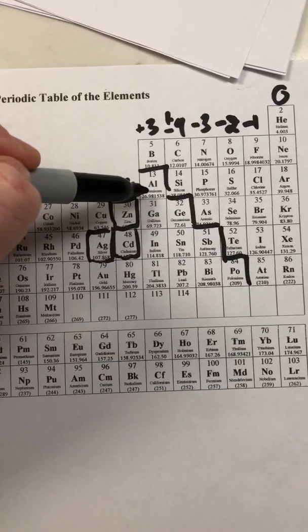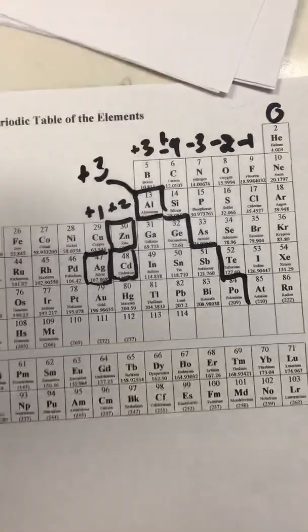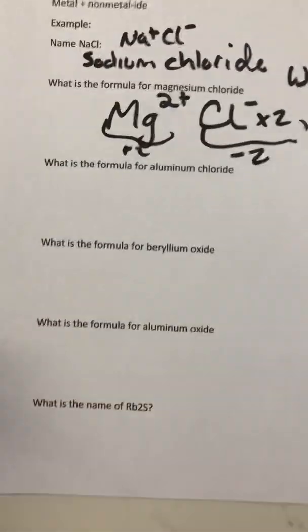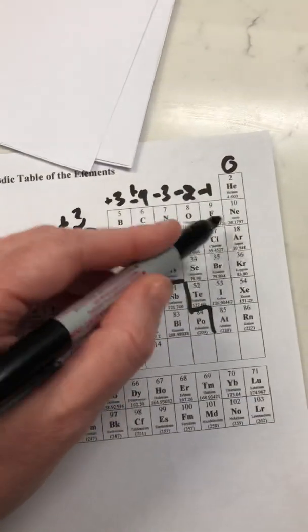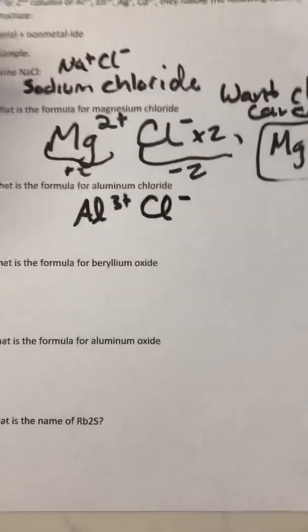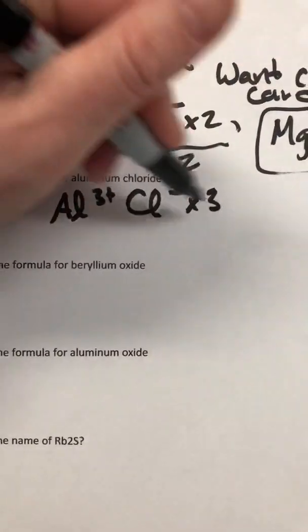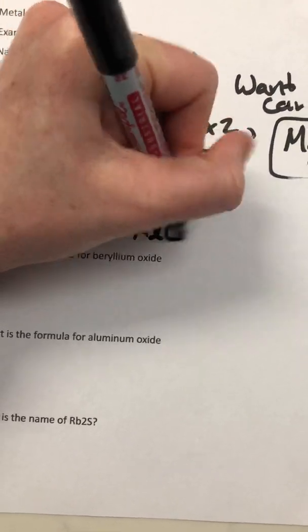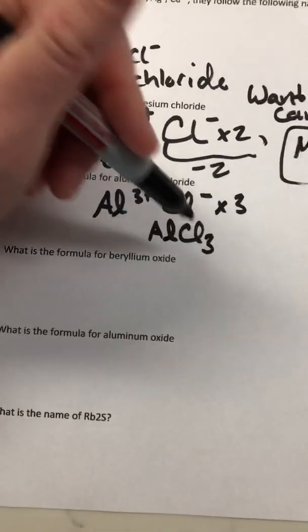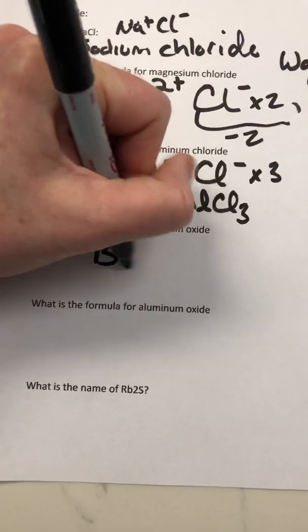What is the formula for aluminum chloride? Aluminum is in column three, so it's a plus three. Aluminum chloride: Al is 3-plus, and chloride is negative one. You need three negatives to cancel out the three positives, so aluminum chloride is AlCl3. Moving to beryllium oxide: beryllium has a two-plus charge and oxide is O 2-minus — you just need one of each. Positive two plus negative two equals zero, so the formula is BeO.